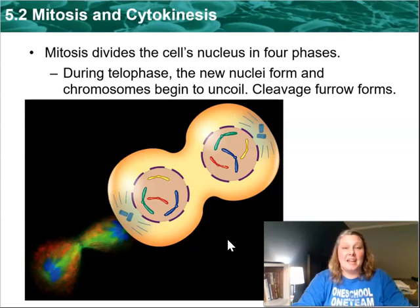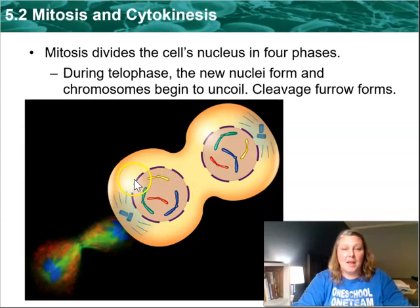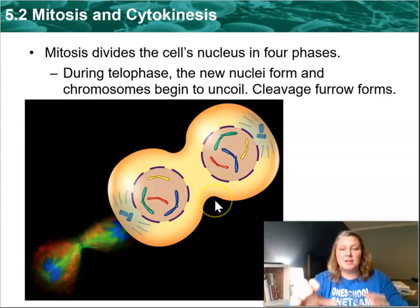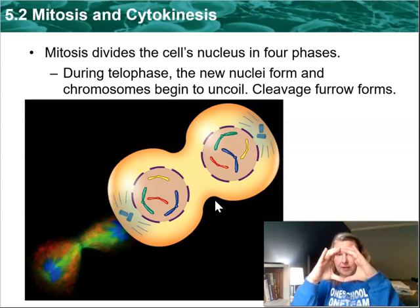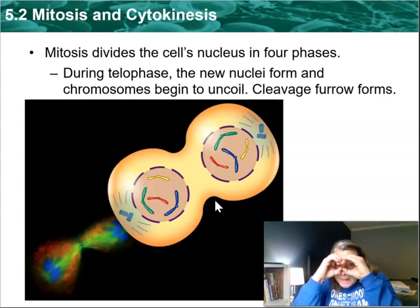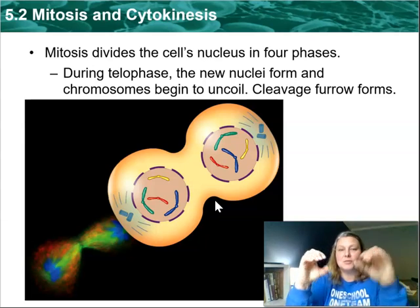Here you see a cell going through telophase. The chromosomes are uncoiling, the nuclear envelope is coming back, the centrioles are calming down, and the spindle fibers are getting shorter. Right here we have our cleavage furrow — it's an area that's starting to pinch in. You can imagine the cell is going through prophase, metaphase, anaphase, and as everything's happening it's kind of doing this, and then that cleavage furrow forms — and eventually you've got two new cells.